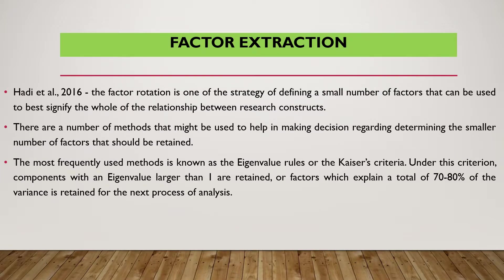For Factor Extraction, from Hardy et al. 2016, factor rotation is one strategy for defining a small number of factors that best represent the whole of the relationships between the research constructs. The most frequently used method is Eigenvalues, known as the Kaiser Criteria. Under this criterion, components with Eigenvalues larger than 1 are retained, and factors which explain a total of 70 to 80% of variance are retained for the next process of analysis.